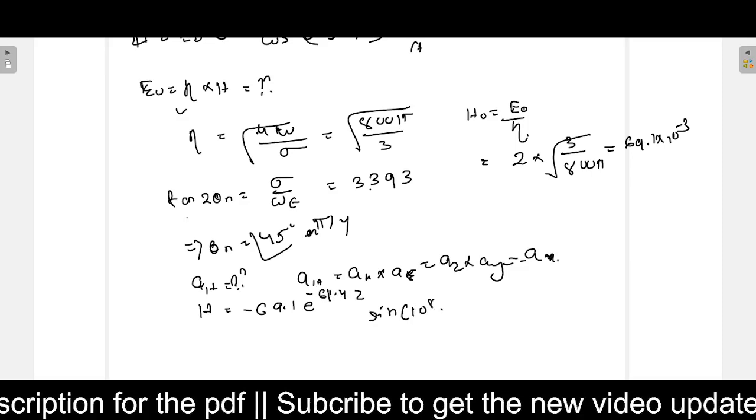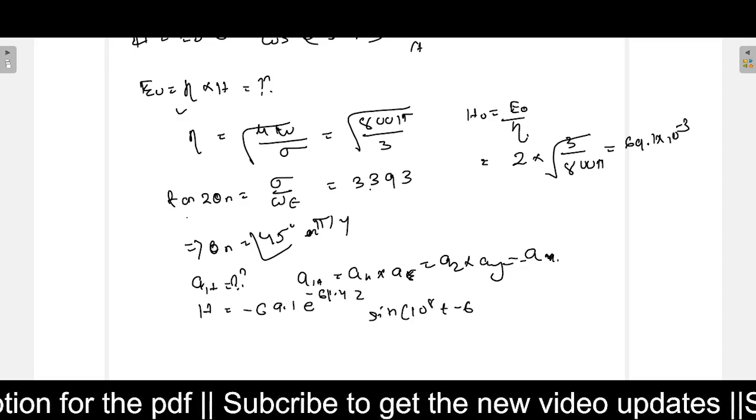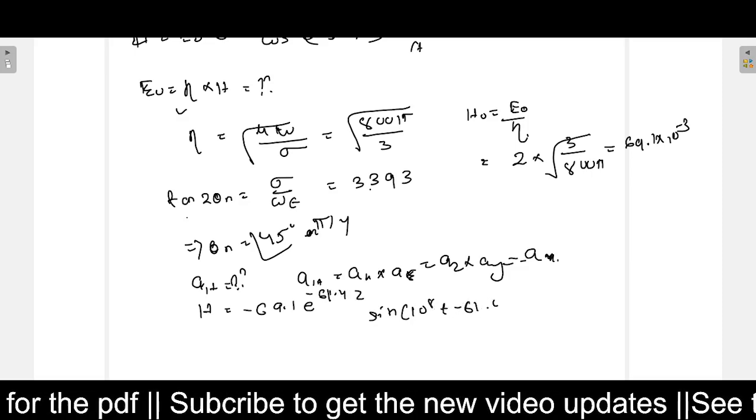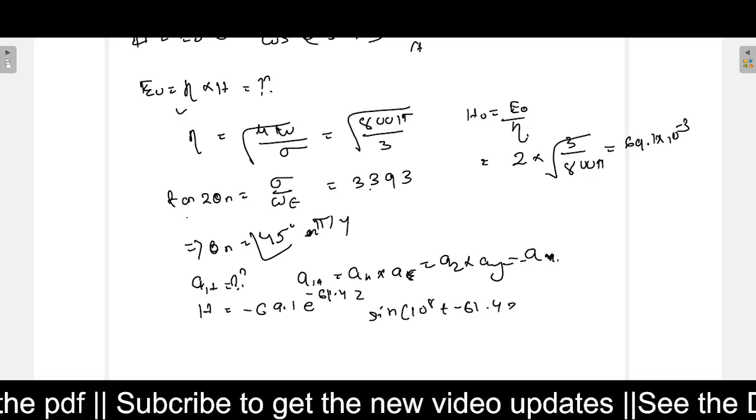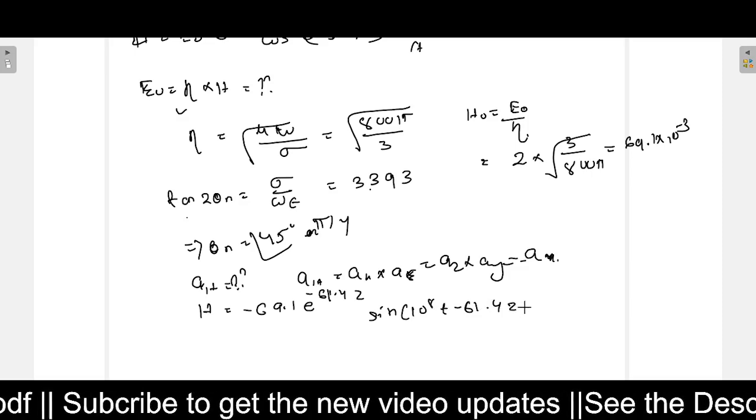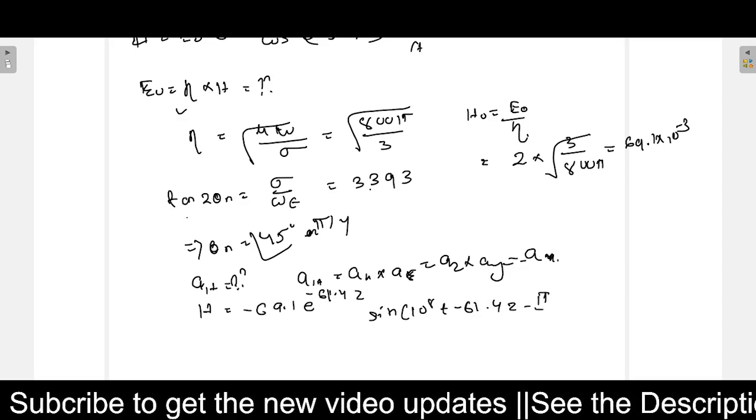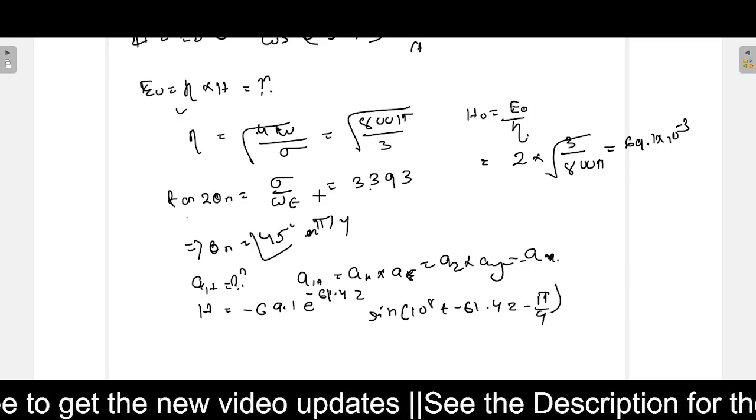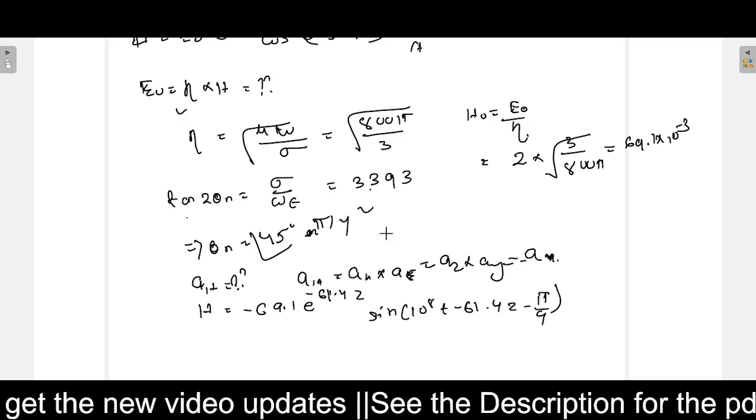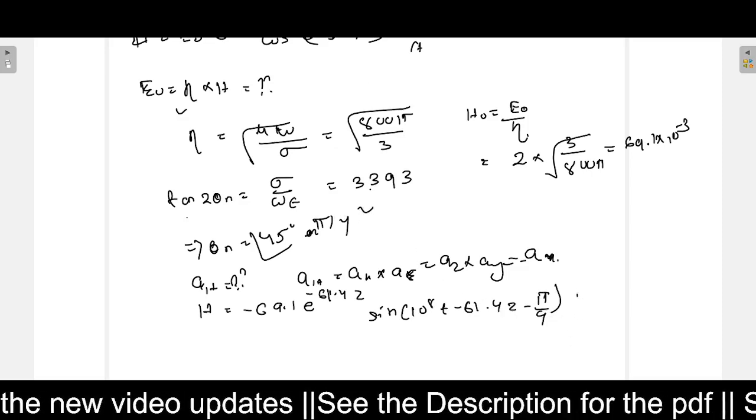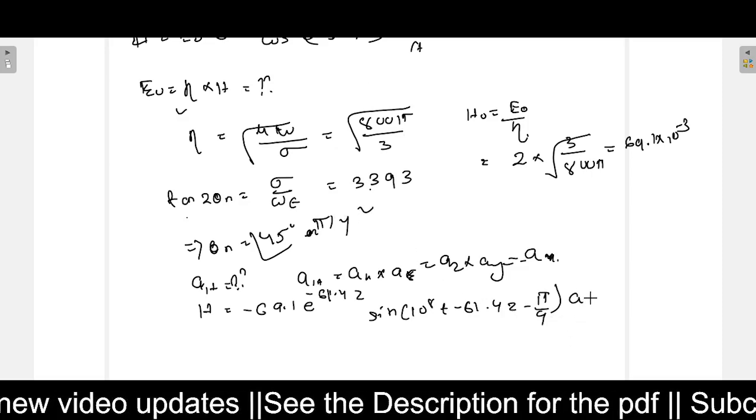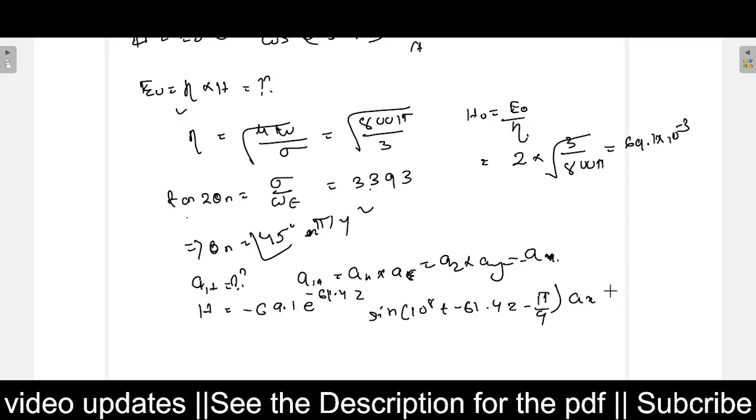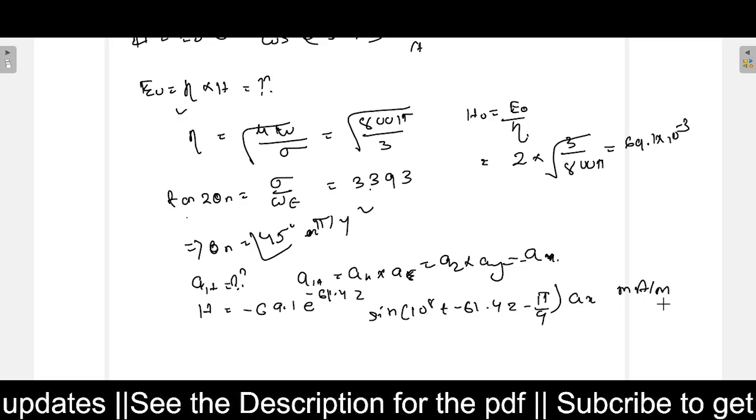...sine of 10^8*t minus beta value also we got the same, 61.4*z, and here one angle factor is there because we got it here. And the direction is a_x milliamperes per meter.